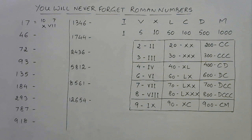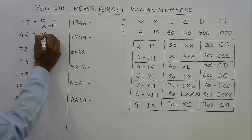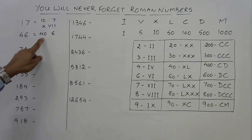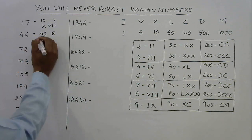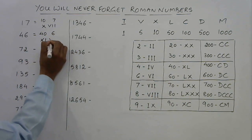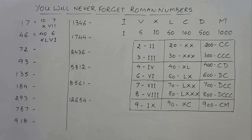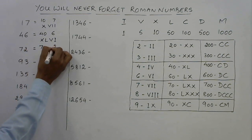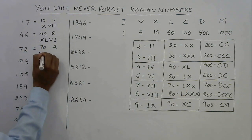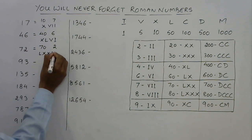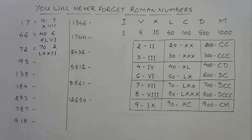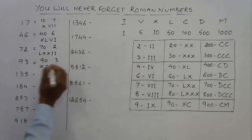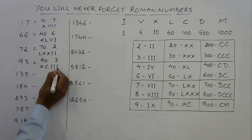Next, 46 is 40 and 6. Forty is XL and 6 is VI, so 46 is XLVI. For 72: 70 is LXX and 2 is II, giving LXXII. For 93: 90 is XC and 3 is III, so 93 is XCIII.